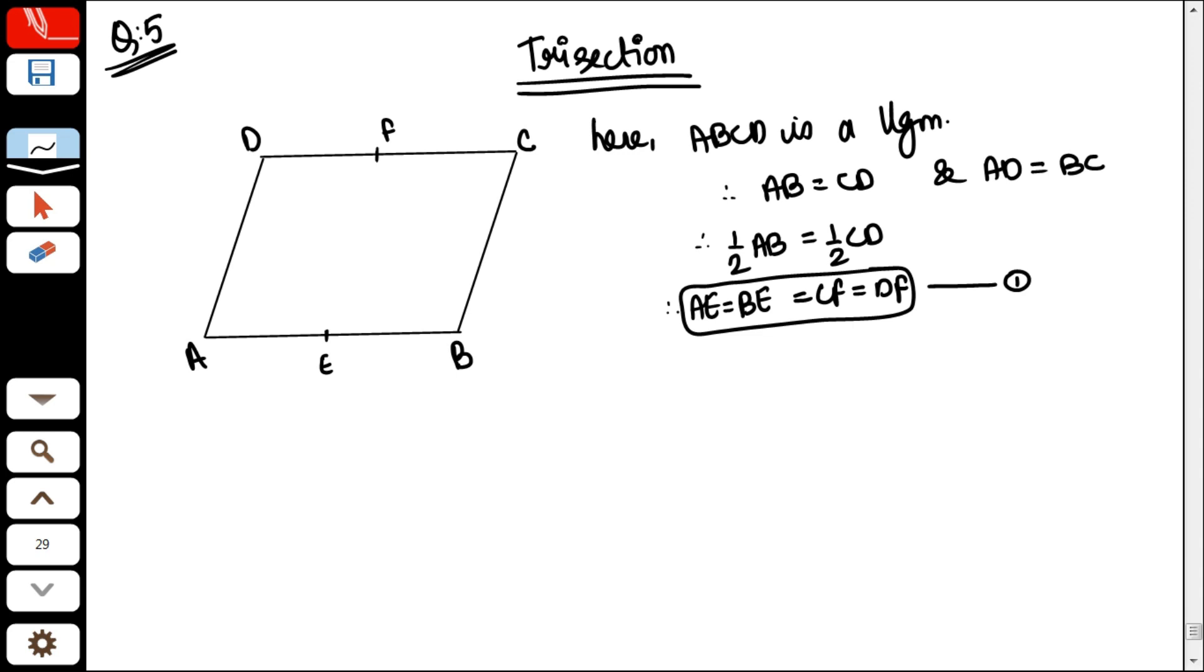Now pay attention carefully. Now I'm joining one more thing, it's given ahead in the question. Show that the line segments AF and EC. This is AF, and this is EC.